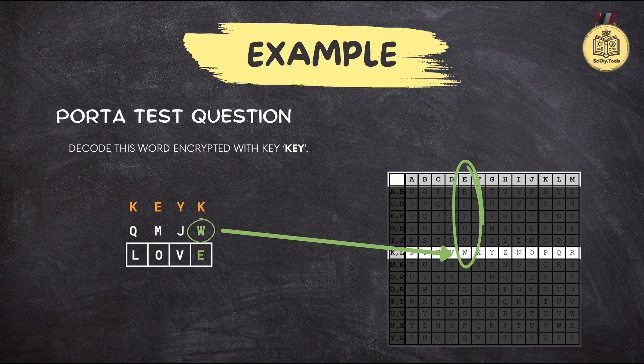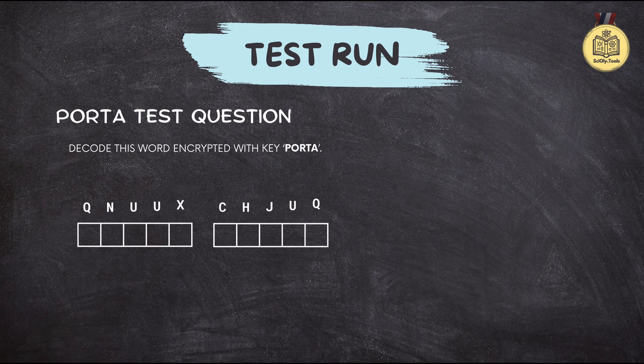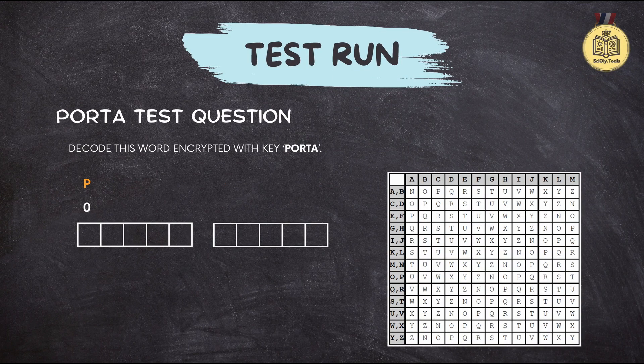I told you it was easy — and kind of romantic too. Now, how about we try a slightly longer example? First things first: we need to align the keyword and ciphertext. PORTA is shorter than the message, so we repeat it to match the length. Just follow the same steps as before — start with the first letter pair O and P.